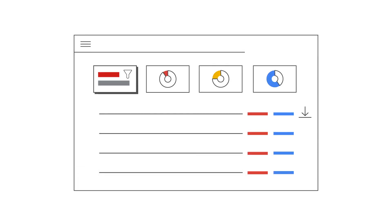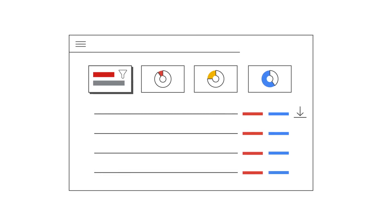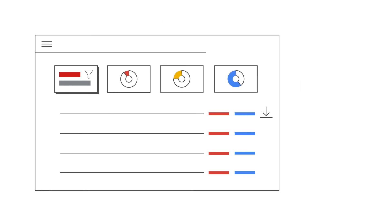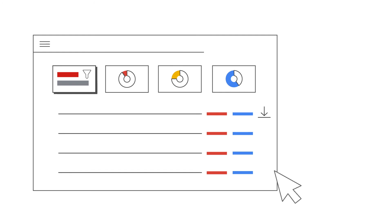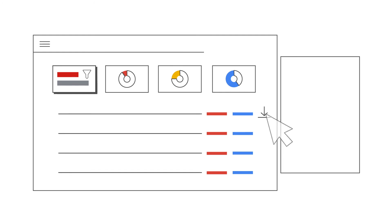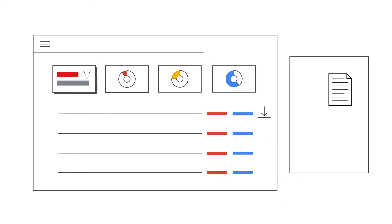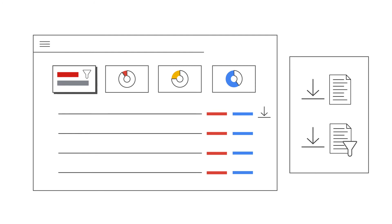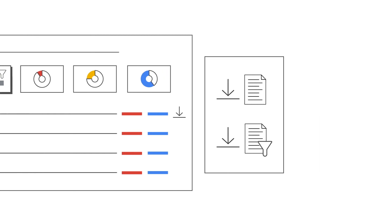If you prefer to organize the data in your own way, there is also the Download CSV button. This feature will bring a drop-down menu with two options: one for downloading all data and the other for downloading data with currently selected filters applied.